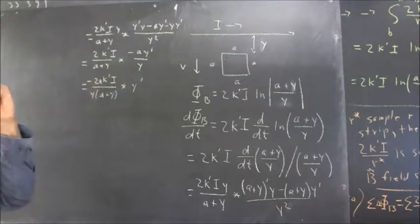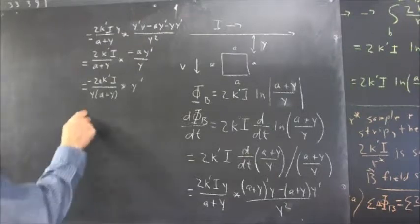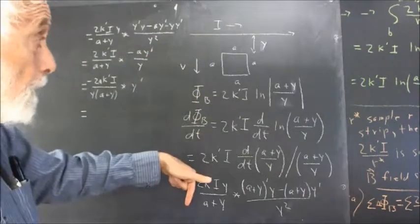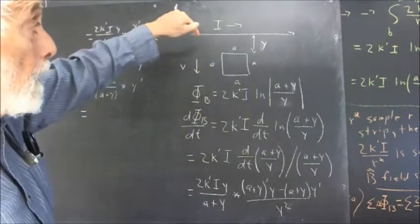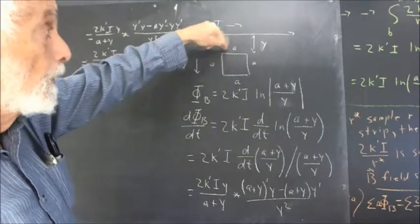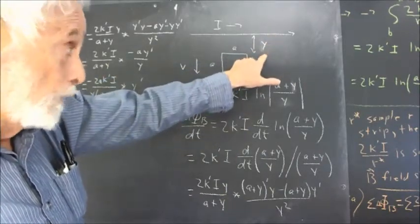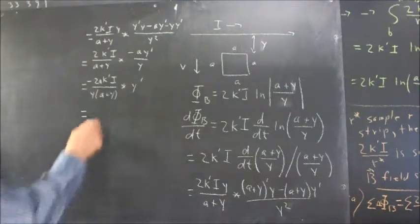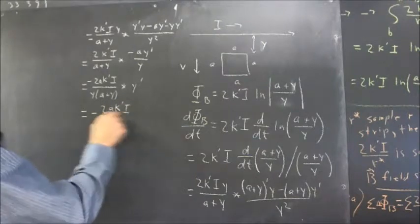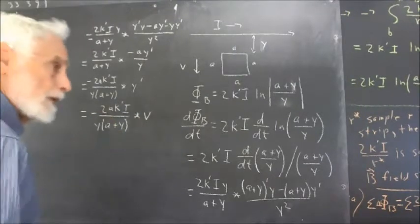We haven't done anything yet with y prime. What is y prime? This thing is moving with velocity v in the direction away from the source. Y is the distance of this edge from the source, so y prime — the rate of change of y — is just equal to v. So now we have the expression: negative 2a · k prime · i over y · (a + y), times v.